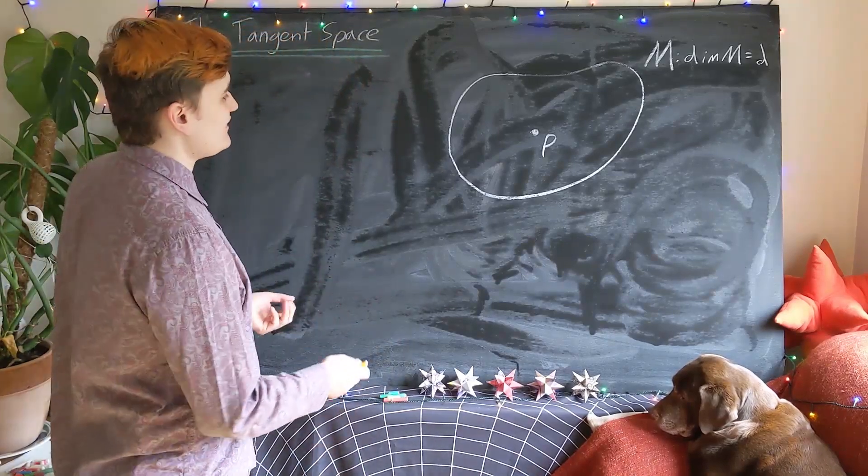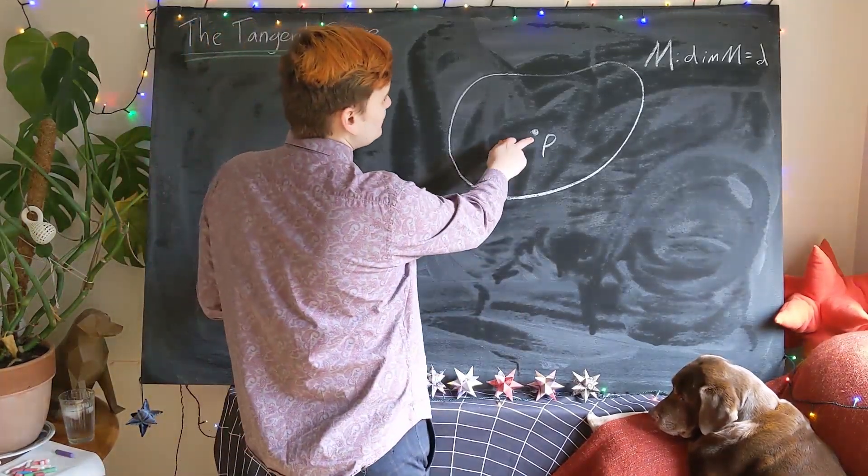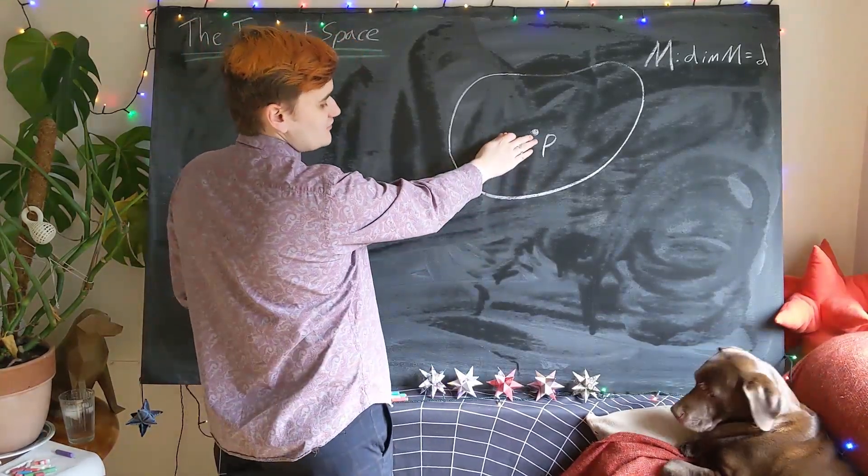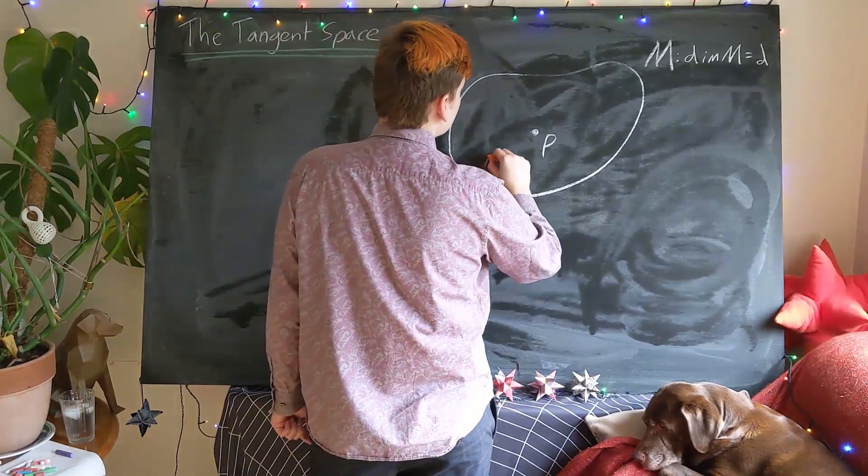Well, to begin with, we need to first consider the set of all possible curves, or smooth curves, that pass through point P. So they could, for example, there's one possible curve,